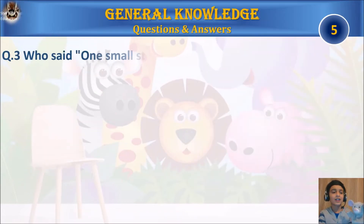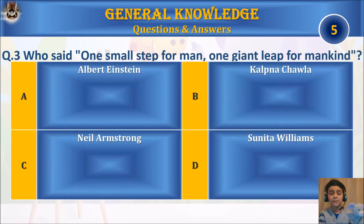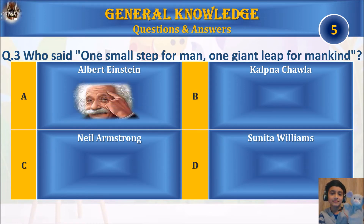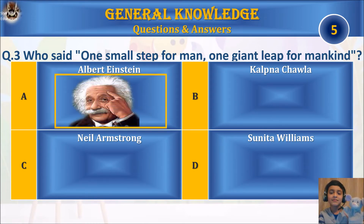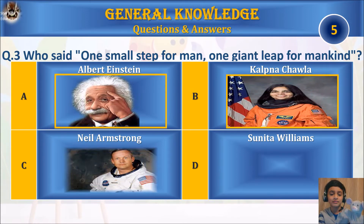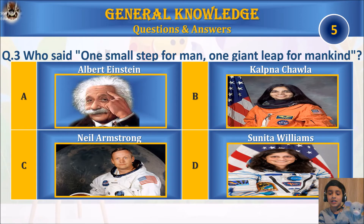Question three: who said 'one small step for man, one giant leap for mankind'? A) Albert Einstein, B) Yuri Gagarin, C) Neil Armstrong, or D) Serena Williams? Your time starts.